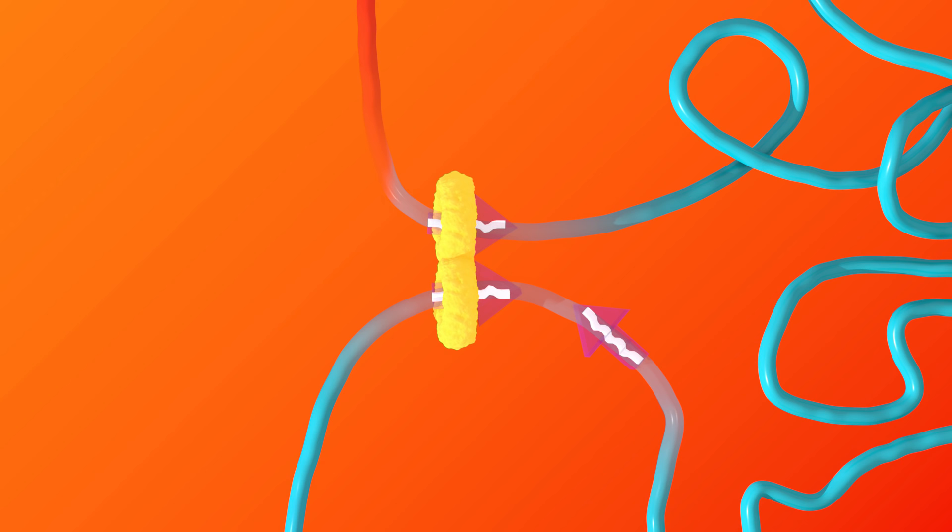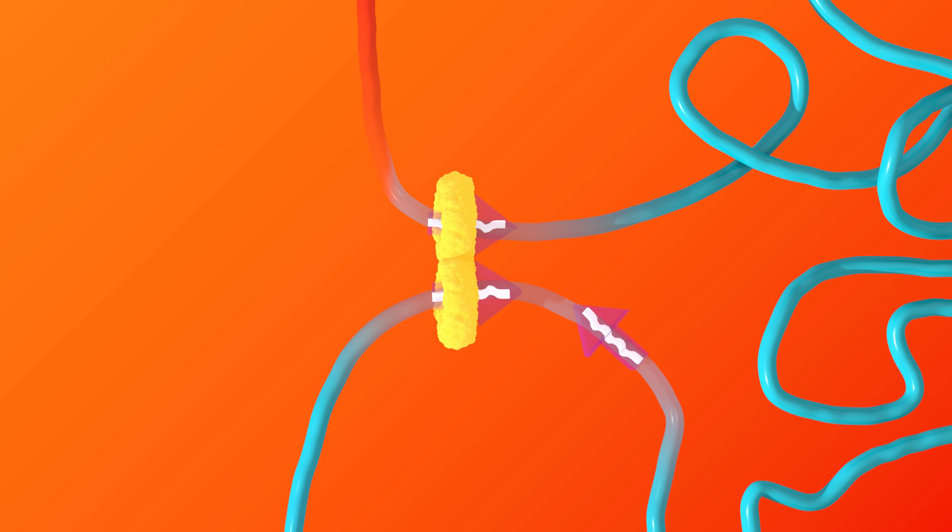This behavior leads to a result we call the convergent rule. The pair of CTCF motifs at the ends of a loop must be pointing towards one another on the DNA.